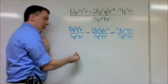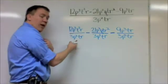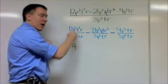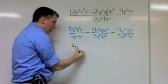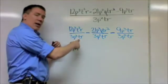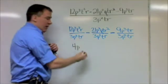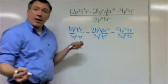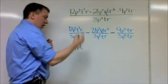So here we go. 12 divided by 3, well that's 4. p³ divided by p² - I'm subtracting, 3 minus 2 is 1, so that's p to the 1, I'm just going to write p. t² divided by t: 2 minus 1, that's t. r divided by r, well that cancels, it's gone, so it's not there anymore.